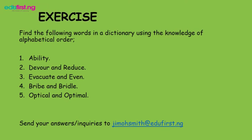Exercise: find the following words in the dictionary using the knowledge of alphabetical order. One: ability. Two: devour and reduce. Three: evacuate and even. Four: bright and brittle. Five: optical and optimal. Send your answers and inquiries to jimalsmith@edifers.ng. Have a wonderful day.